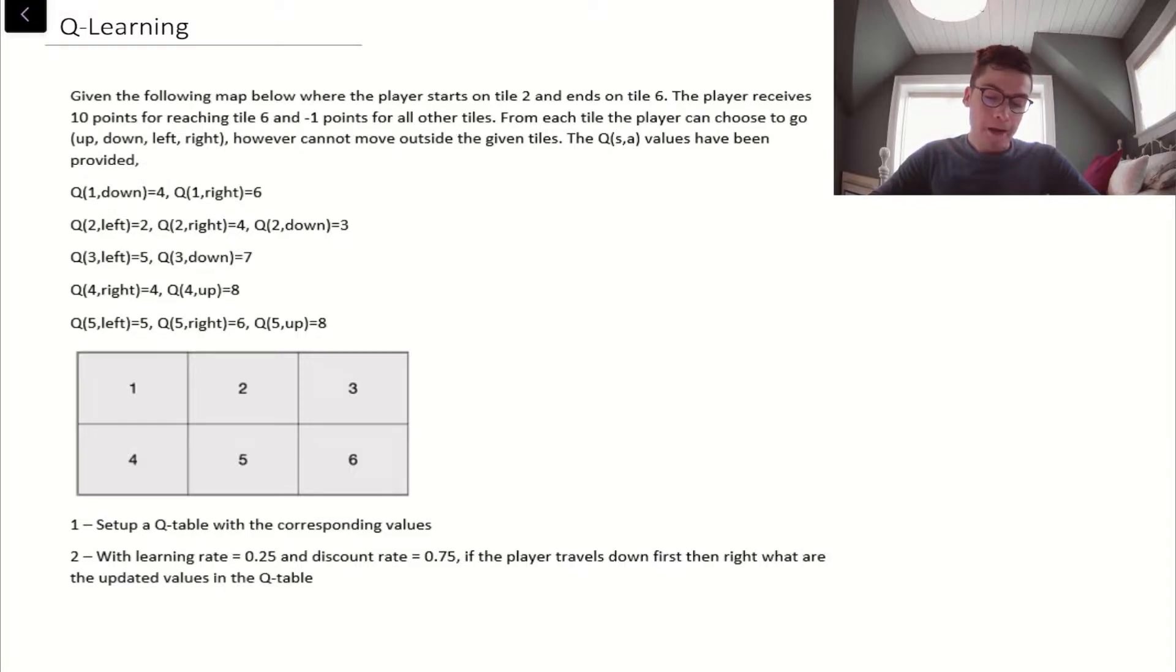The problem's asking, given the following map here, where the player starts on tile 2 and ends on tile 6. The player receives 10 points for reaching tile 6 and minus 1 points for all other tiles. From each tile, the player can choose to go up, down, left, or right. However, it cannot move outside the given tiles. The Q(S,A) values have been provided. This is the environment that we'll be working with, and these are all the Q values that are provided to us.